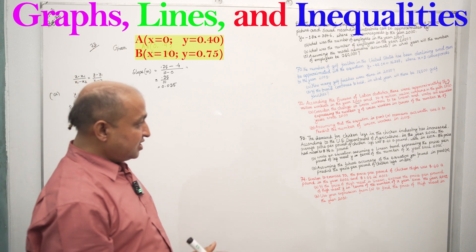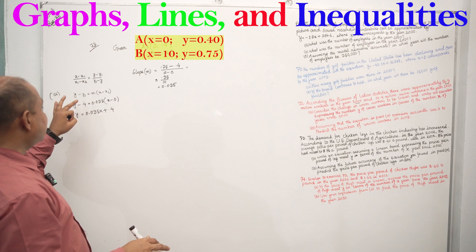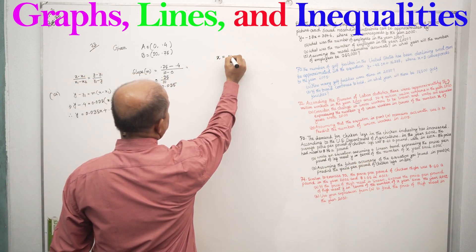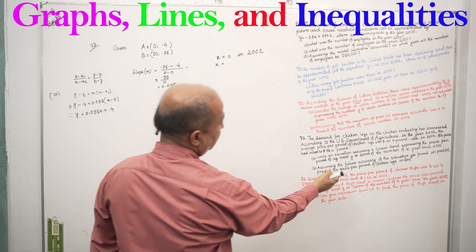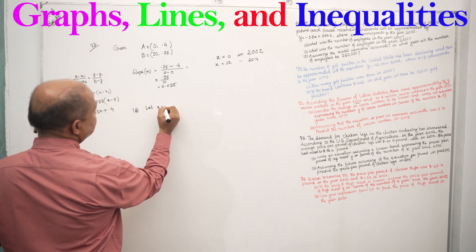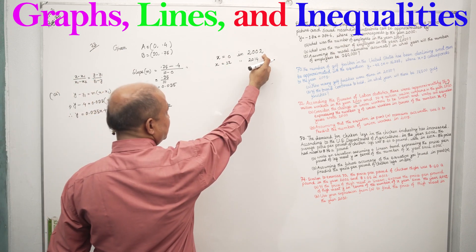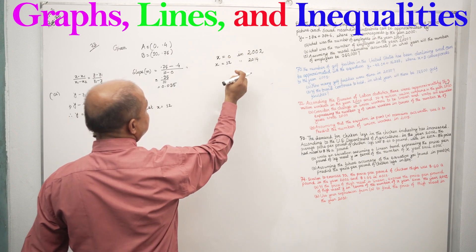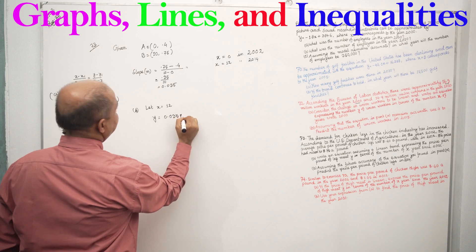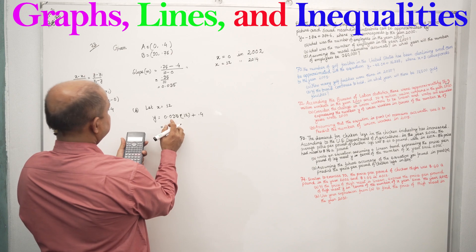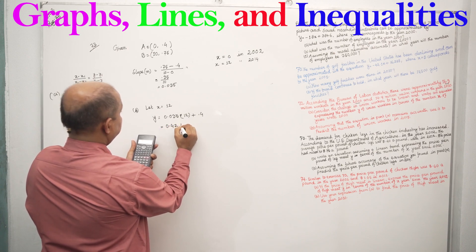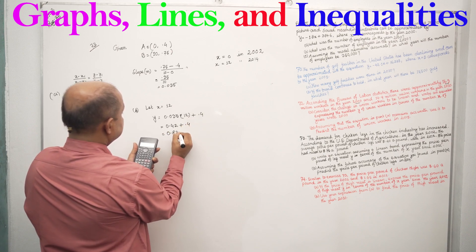Assuming the accuracy of the equation found in part A, predict the price per pound of chicken legs in 2014. X equals 0 in 2002, so X equals 12 in 2014. Substituting: Y equals 0.035 times 12 plus 0.4, equals 0.42 plus 0.4, equals 0.82. So the predicted price is $0.82 per pound.